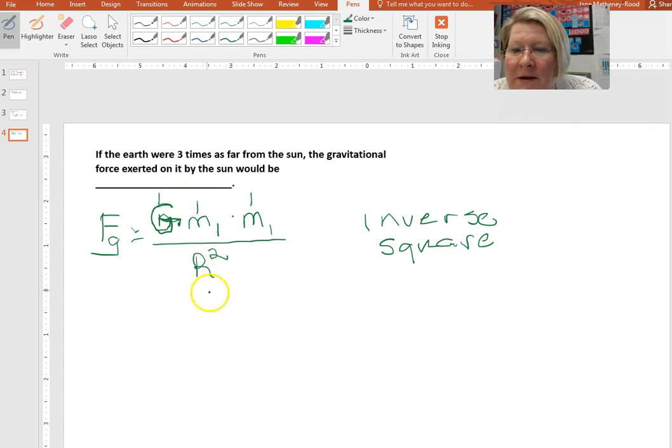So originally let's say that the earth was, to make life simple, one meter from the sun because one is easy to multiply and divide by. So if that were true then we could take one times one times one divided by one squared and we'd get a force of one Newton.